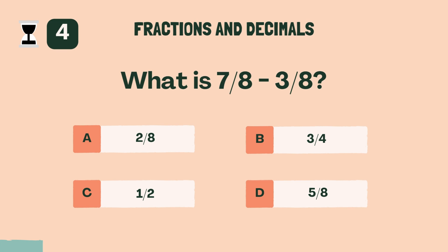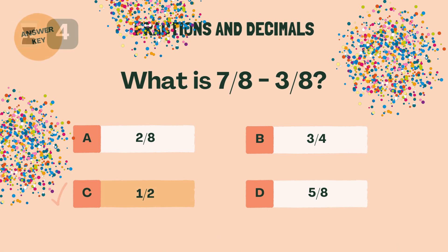What is 7 eighths minus 3 eighths? C, 1 half.